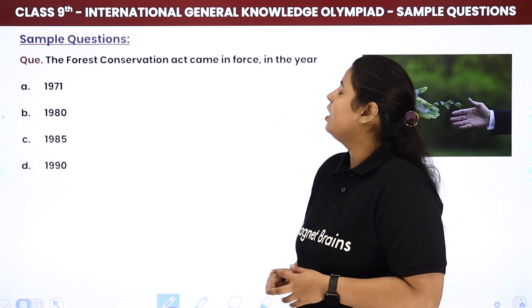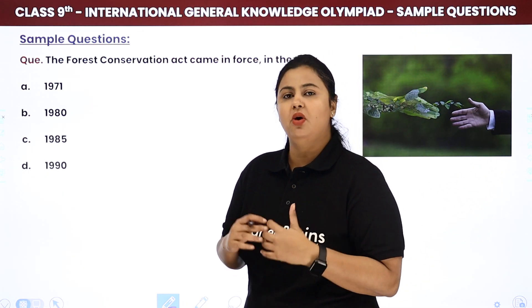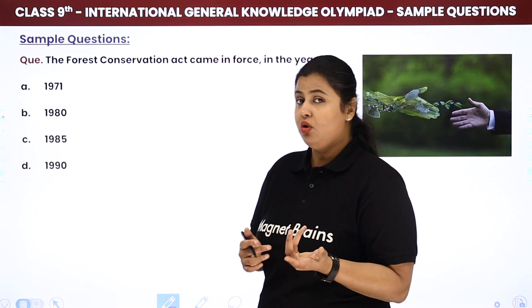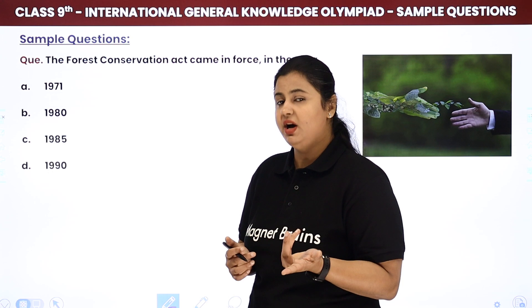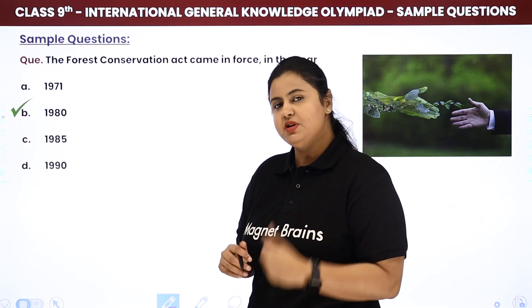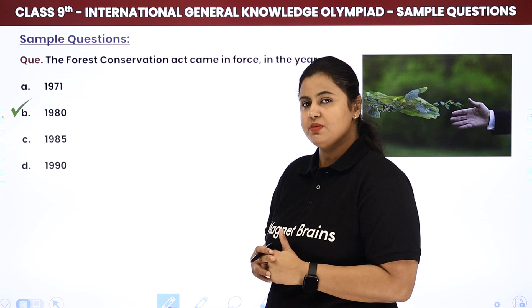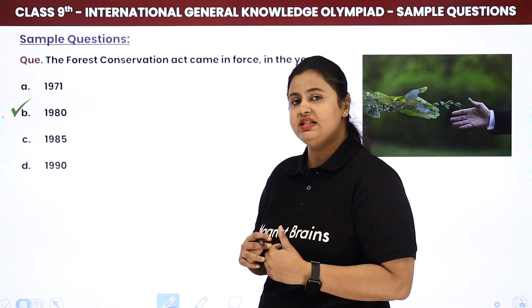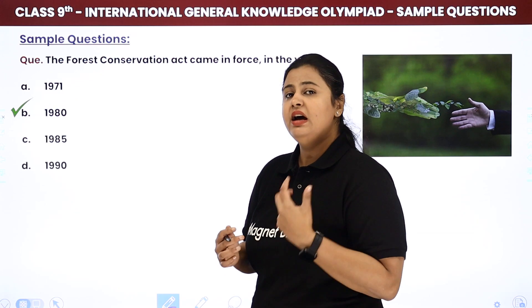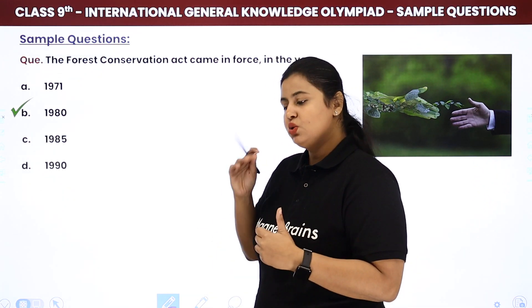Now coming to the second question: the Forest Conservation Act came into force in which year? In our country, the Forest Conservation Act was enacted and enforced on the 25th of October 1980. The main purpose of this law was conservation of forests — basically to curb deforestation activities. It made deforestation a punishable offense, and today law enforcement bodies follow it very strongly. However, we also discussed that we need some laws exclusively on flora.